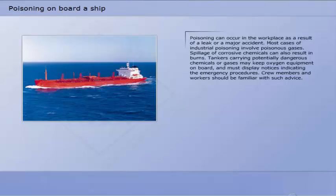Poisoning can occur in the workplace as a result of a leak or major accident. Most cases of industrial poisoning involve poisonous gases. Spillage of corrosive chemicals can also result in burns. Tankers carrying potentially dangerous chemicals or gases may keep oxygen equipment on board and must display notices indicating the emergency procedures.